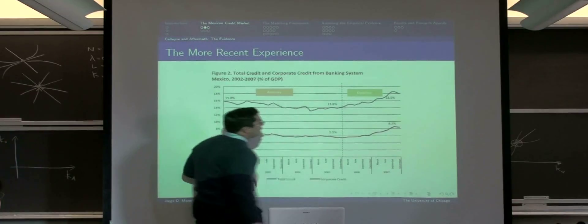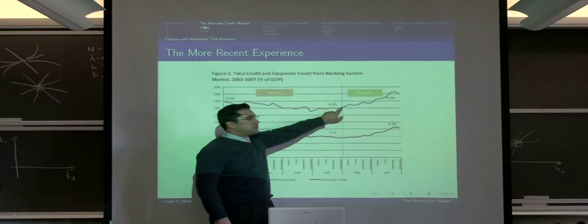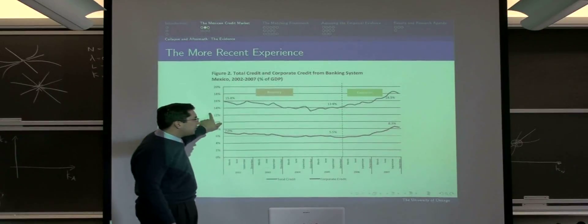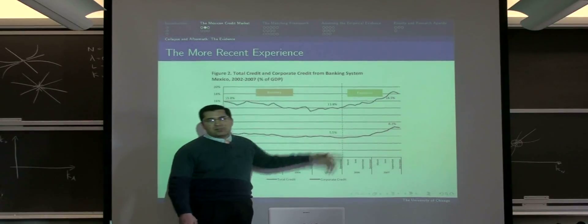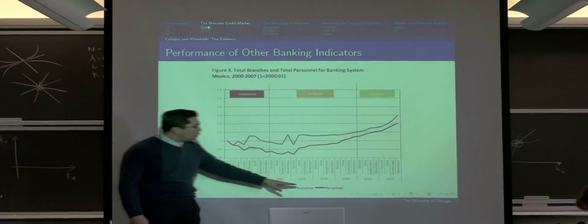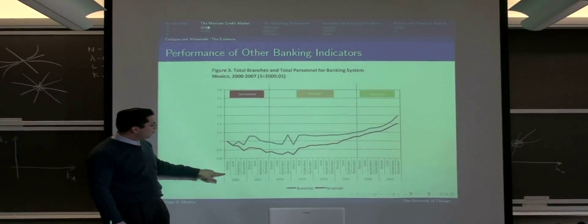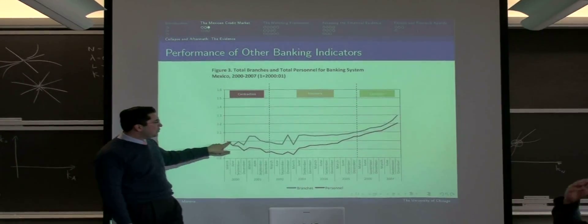From 2006 to 2007, the banking activity increased almost 5% of the GDP for the total credit, and almost 3% for the corporate credit. The increasing banking activity, measured by the number of branches and the personnel, if we take the first quarter of 2000 as the basis, shows a huge increase also for the last period 2006 and 2007.